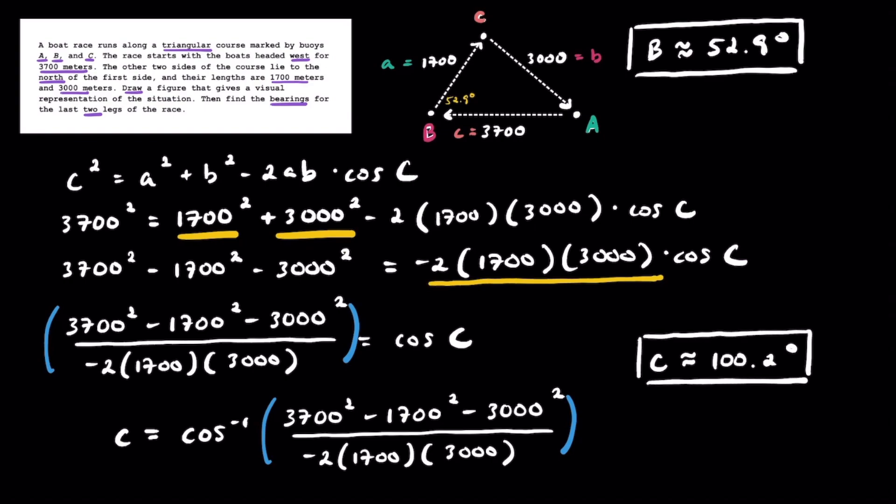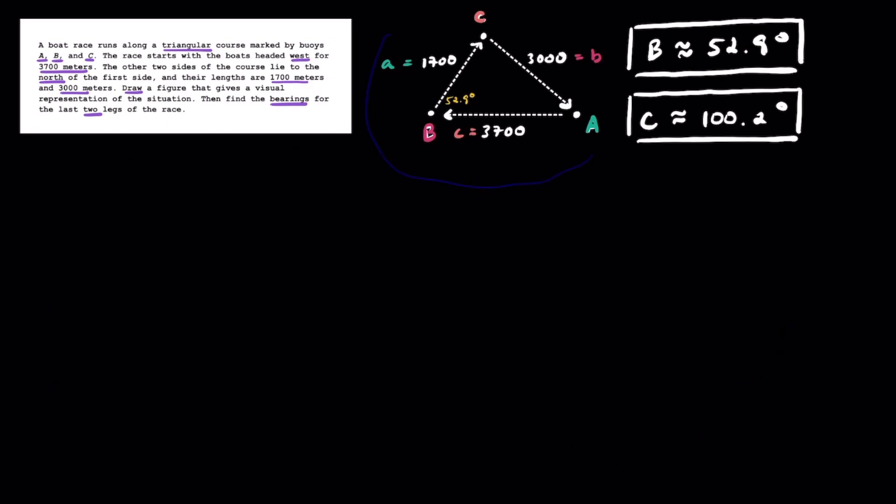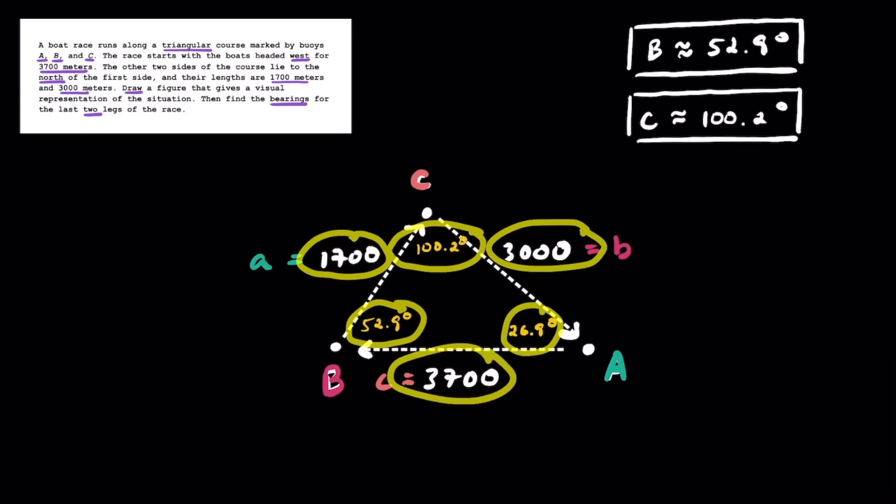Now let's go back to our diagram. This is 100.2 degrees. We can add these three angles up and subtract from 180, and that gives us that angle A is 26.9 degrees. Just a bit of a side note here that this angle measure of 26.9 should be the smallest angle because 1700 is the shortest side length. 52.9 is the next biggest angle with the medium side length opposite of it. And across from the greatest angle, we have the longest side length. So this seems pretty reasonable to me.